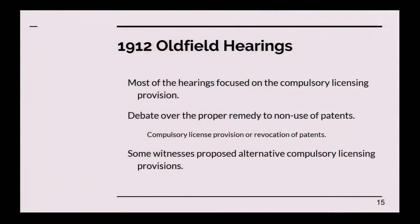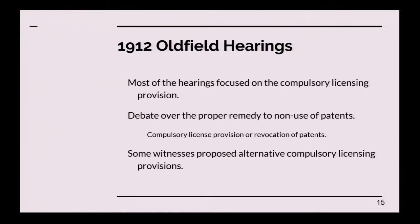Most of the 1912 hearings, although it was a broader patent reform bill, focused on the compulsory licensing provision. There was a debate over the proper remedy to the non-use of patents — some thought it should be a compulsory license, some thought the patent should simply be revoked if it wasn't being used. Some witnesses proposed alternative provisions more directed towards public interest uses of patents. For example, the New York City Railroad between New York and New Haven was required to use electric rail because of smoke pollution in the city, and there was a patent issue with that requiring significant royalty payments.